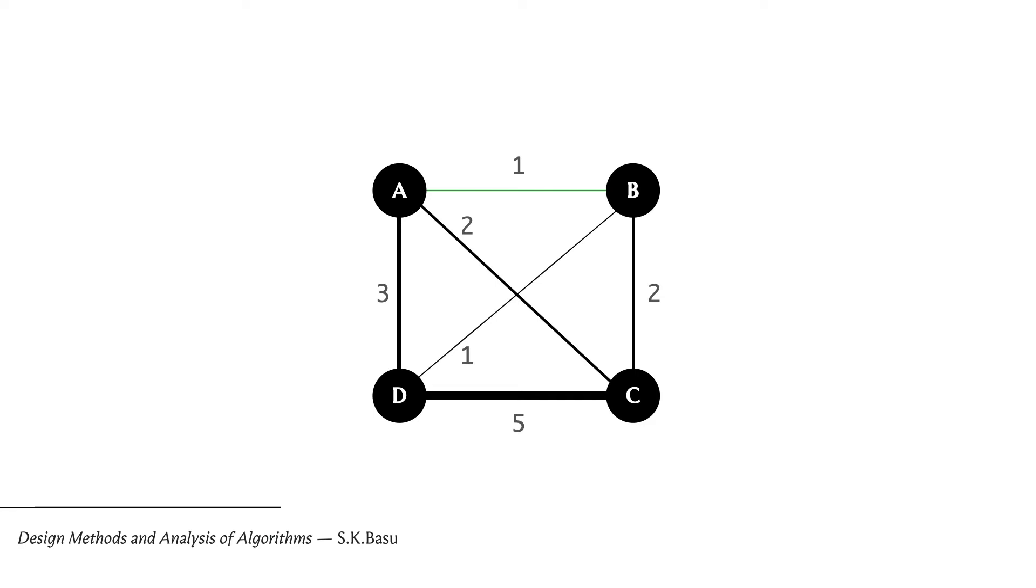From b you have two possibilities - you could go to d or c. It's cheaper to go to d. From d, you cannot go to a or b since they're already visited, so you take this rather expensive edge to c. From c you return to the origin. The total cost of this greedy tour is nine units.